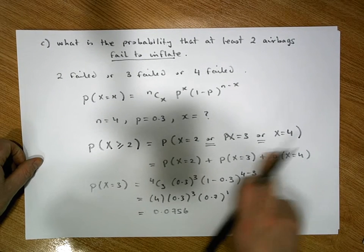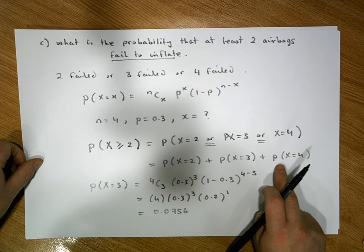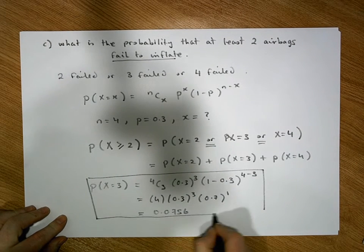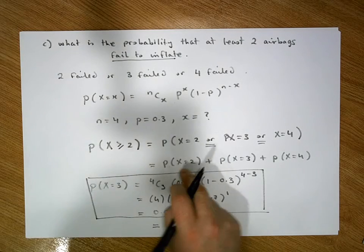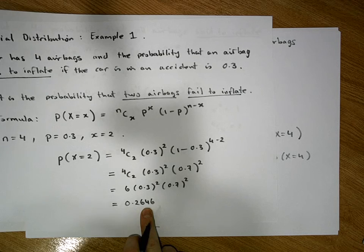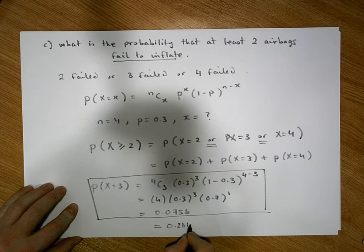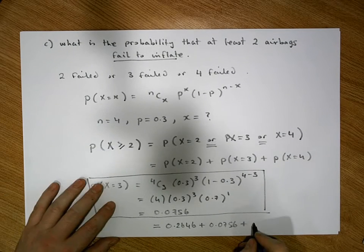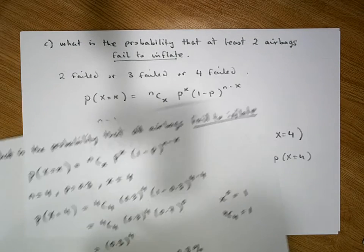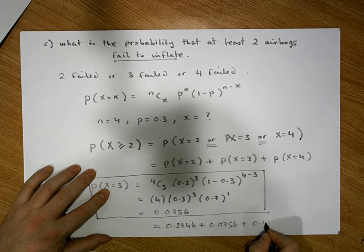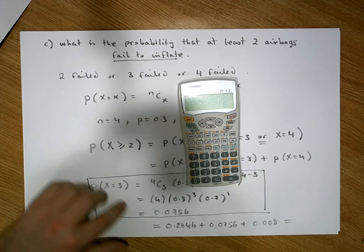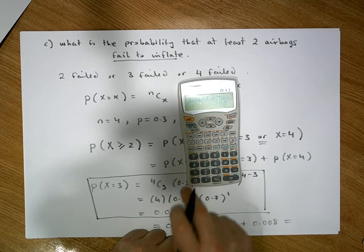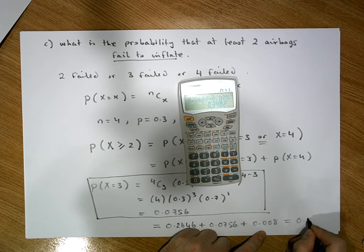Our overall probability is P(X=2) plus P(X=3) plus P(X=4). P(X=2) from the first scenario is 0.2646, plus P(X=3) which we just calculated as 0.0756, plus P(X=4) which is 0.008. Summing these: 0.2646 plus 0.0756 plus 0.008 gives us a probability of 0.3482.